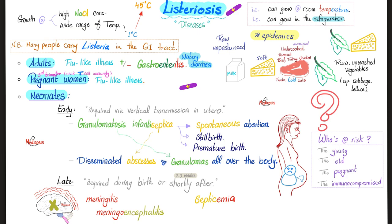Late disease presents with meningitis or meningoencephalitis. Meningitis is inflammation of the meninges surrounding the brain; encephalitis is inflammation of the actual brain substance; meningoencephalitis is both together. Septicemia can also occur. So who is vulnerable to listeriosis? The young, the old, the pregnant, and the immunocompromised — because you need robust T-cell immunity to fight Listeria.